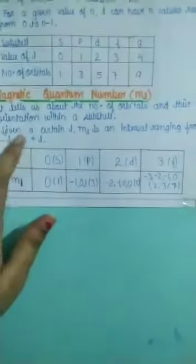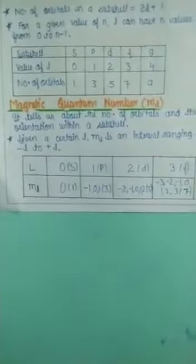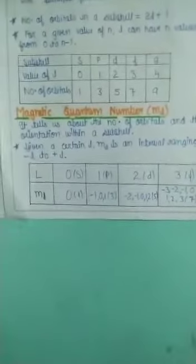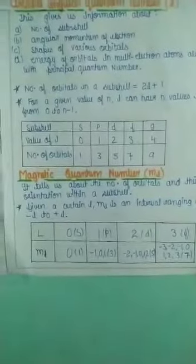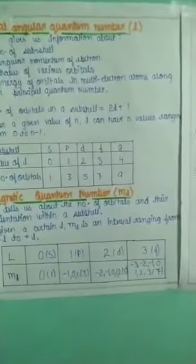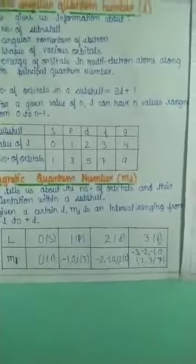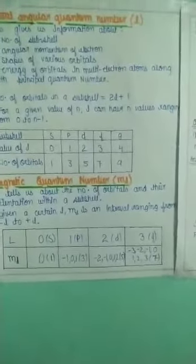The value range of ml is from minus l to plus l. So if l=3, the values of ml will be -3, -2, -1, 0, +1, +2, +3. The values include negative, zero, and positive integers.